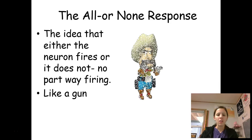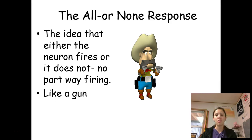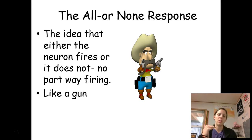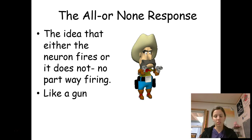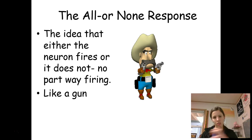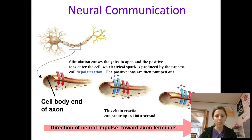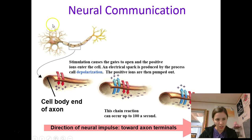So how does the neuron actually decide to fire? We call it the all-or-nothing response. Each neuron has a minimum threshold that it must reach in order to fire information, and once it has reached that threshold — if I've stubbed my toe hard enough — it's going to fire that neural impulse all the way down the cell. The dendrites receive the information that she stubbed her toe, it goes through the cell body, and now it comes to the axon.